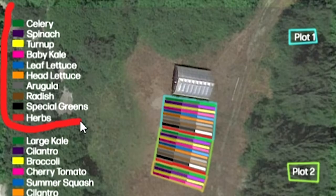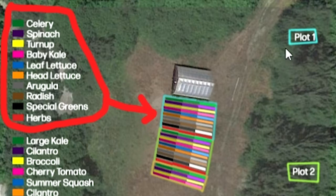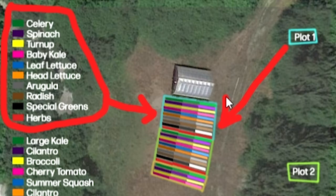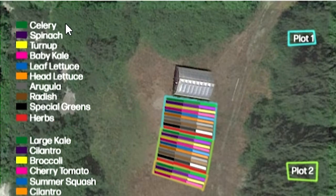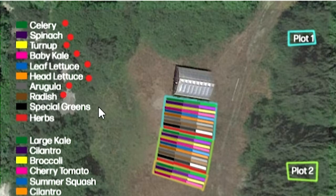The first plot is our high rotation plot — these are all the crops that we're rotating over and over again. They're quick harvesting. With one exception — celery — we've got spinach, turnip, baby kale, leaf lettuce, head lettuce, arugula, radish. Specialty greens like mache, wintercress, purslane, and sorrel. And then you've got your herb bed, which is the 10th bed, with lemon balm and Anthony's aromatic herbs: oregano, rosemary, thyme, and sage.